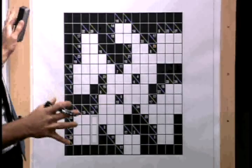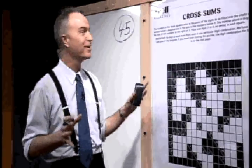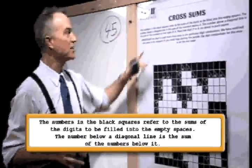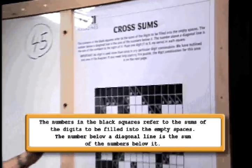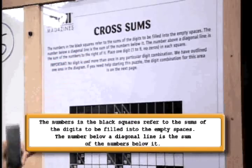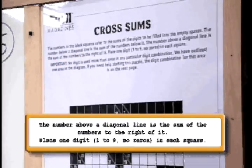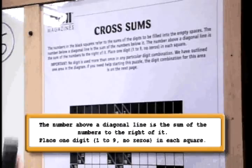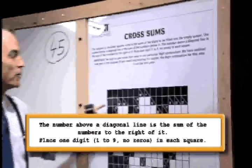Very quickly, we'll read through the instructions because it's always a good place to start. The numbers in the black squares refer to the sum of the digits to be filled into the empty spaces. The number below a diagonal line is the sum of the numbers below it. The numbers above the diagonal line is the sum of the numbers to the right of it.